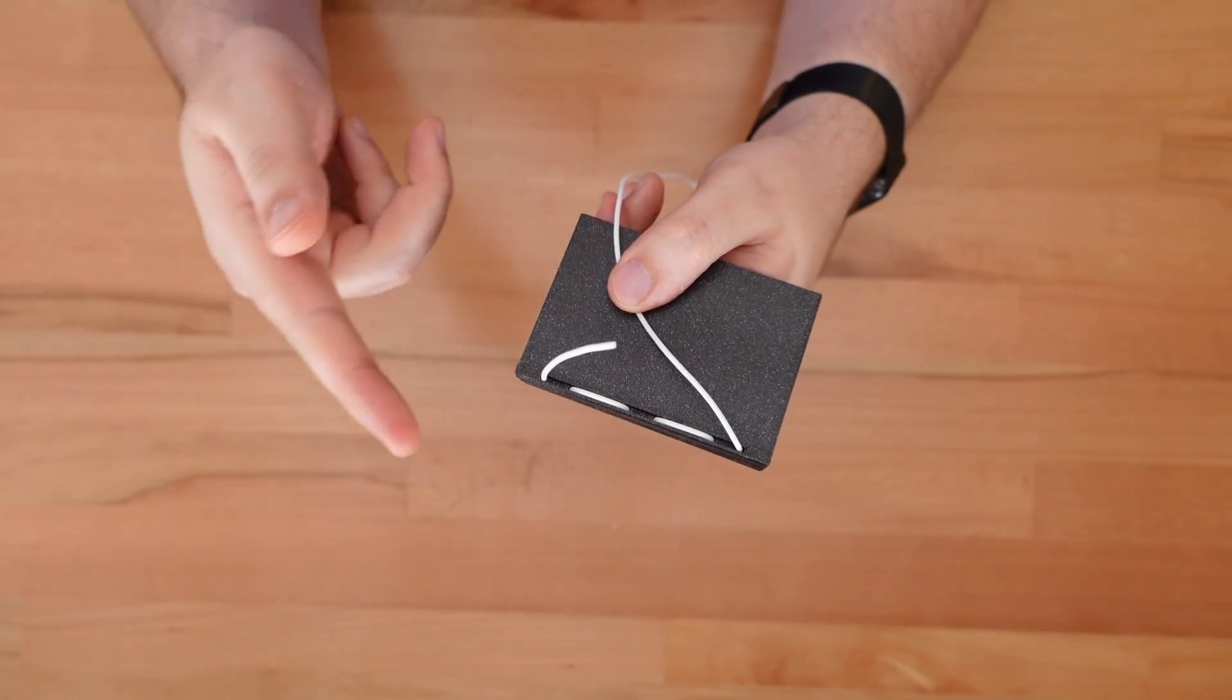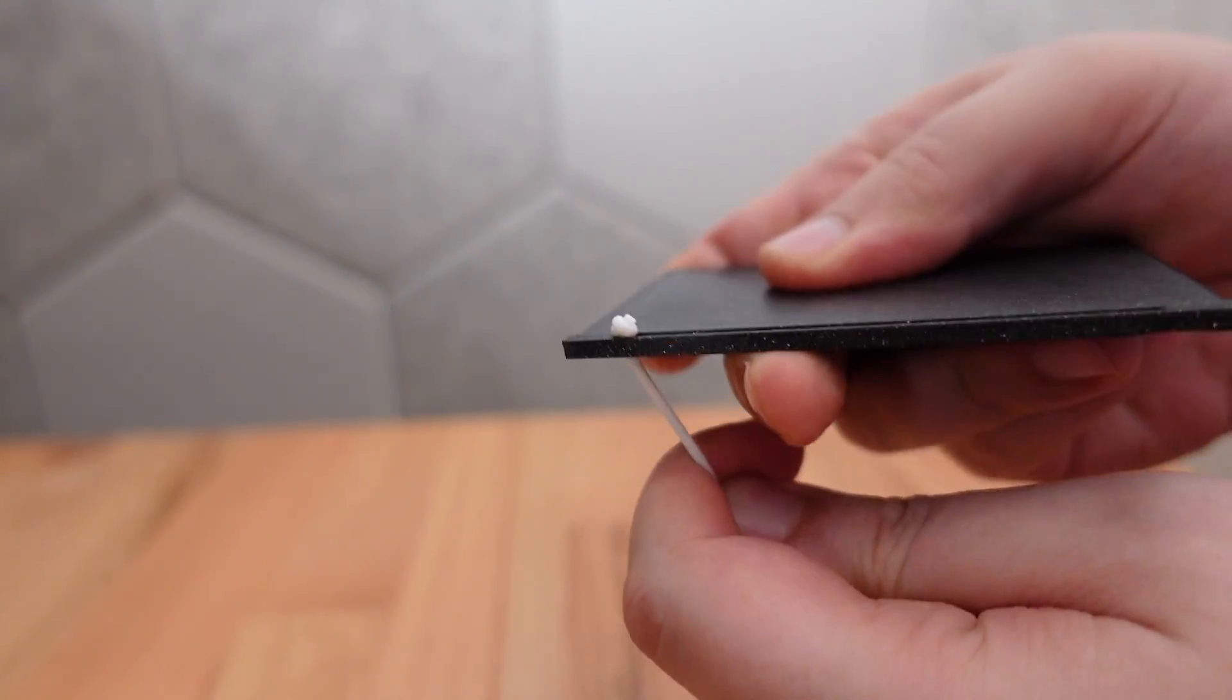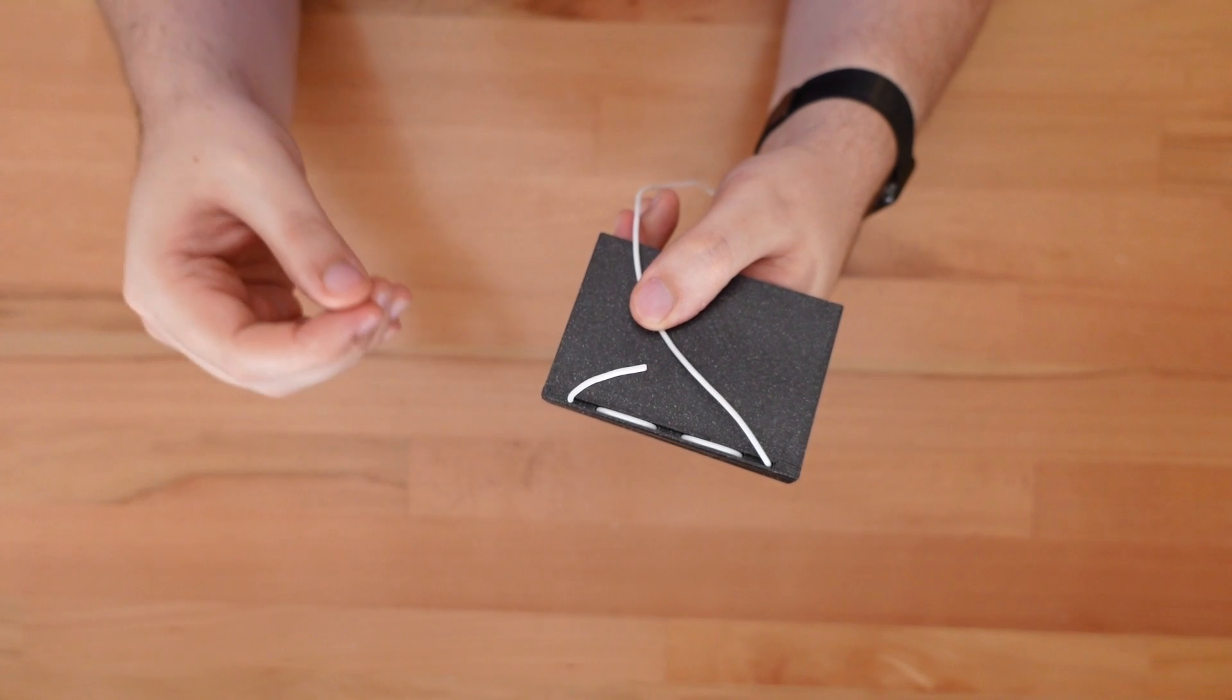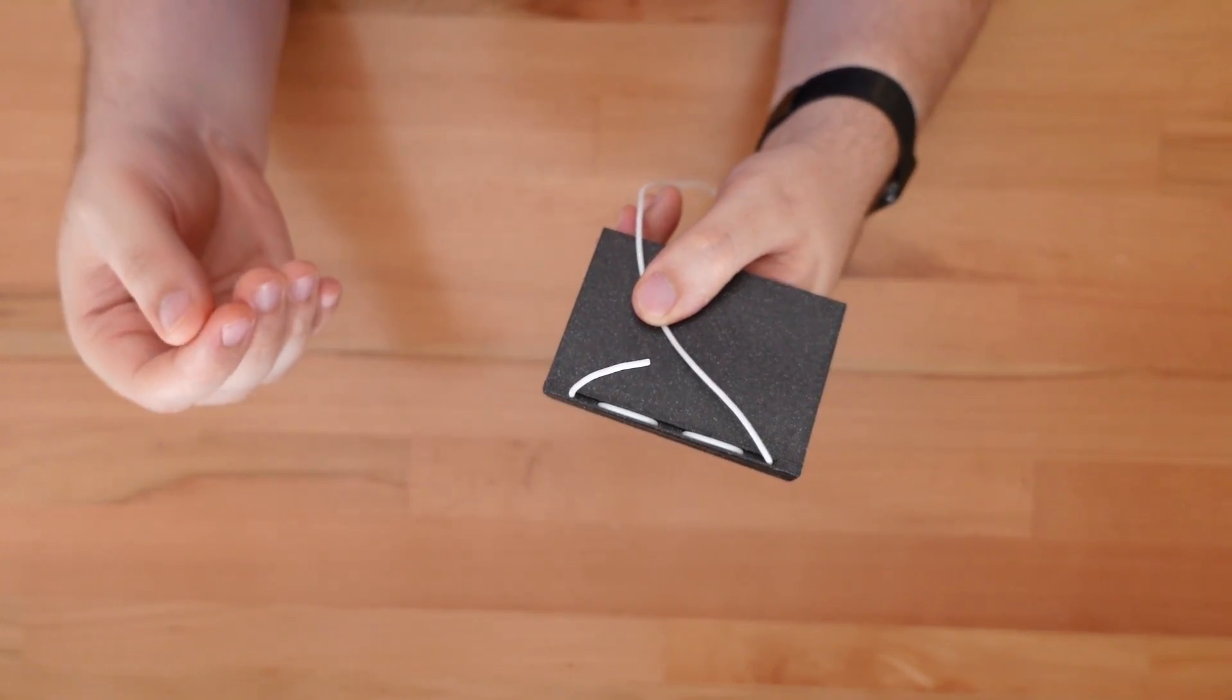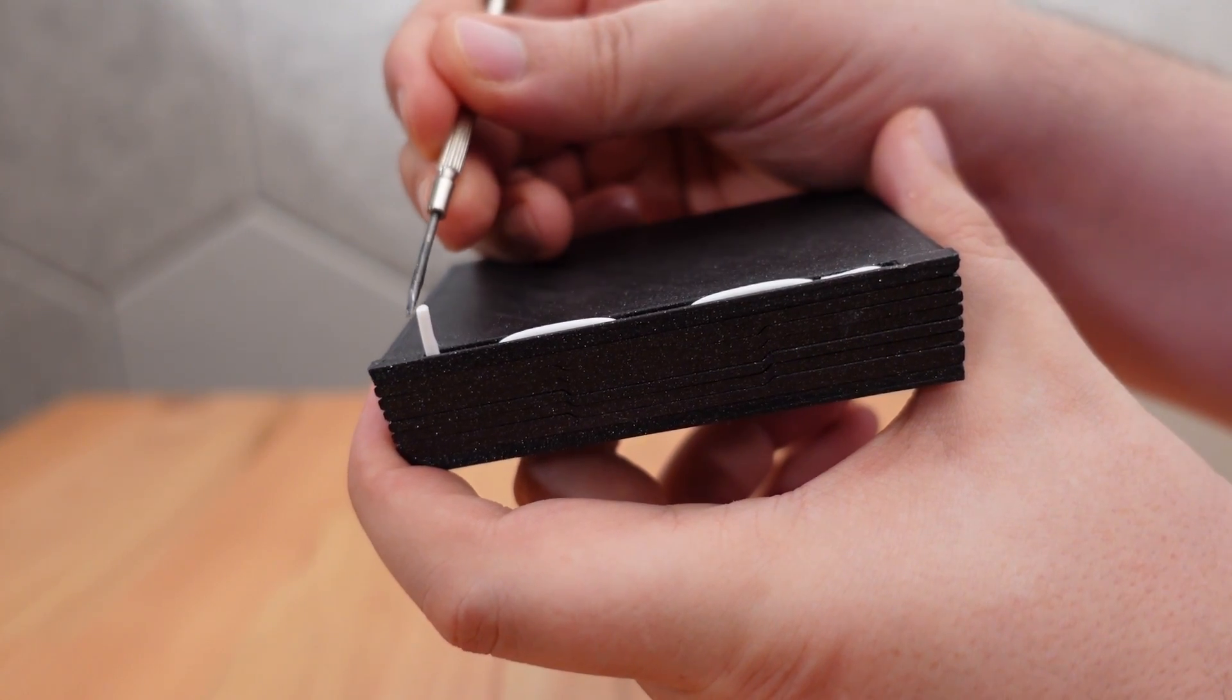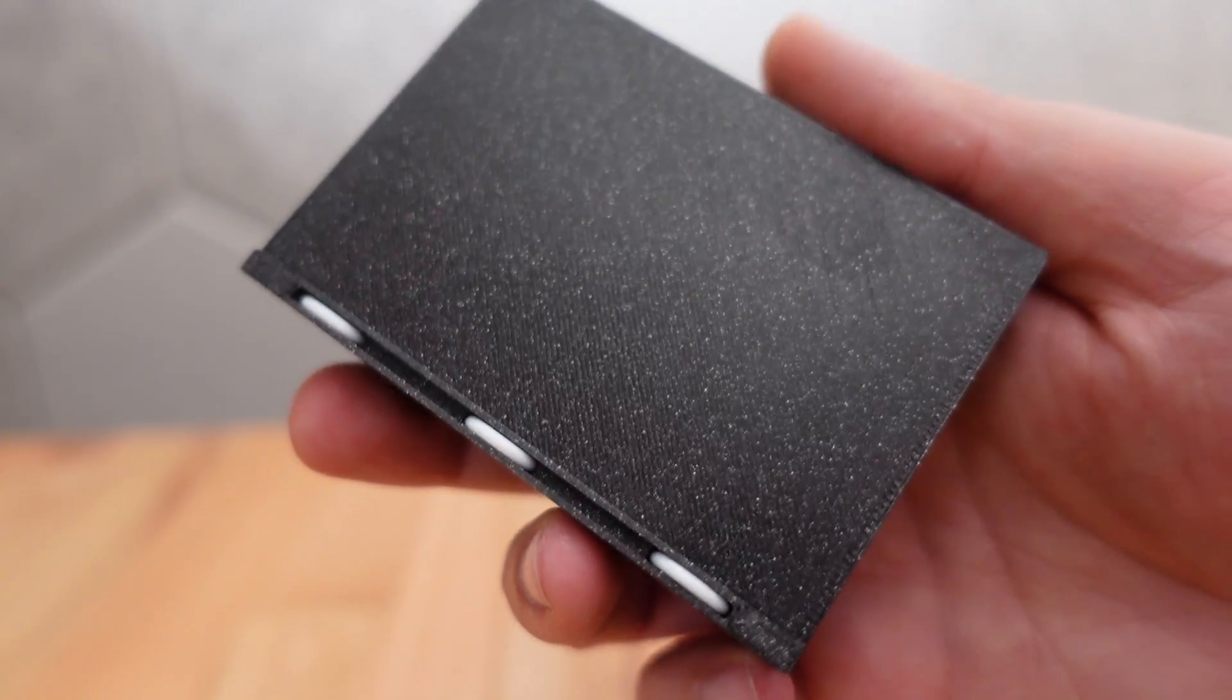At this point you have a few options to secure the TPU. We could tie a small knot so it can't slip back through the hole, or we could melt one end into a blob which would also trap the filament. For this print I'm going to use a drop of super glue and then press the filament into the slot in the back cover. I think this option looks the nicest.